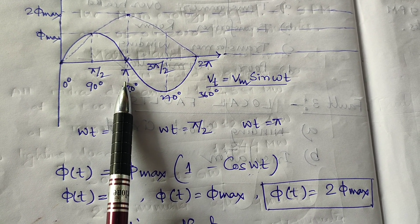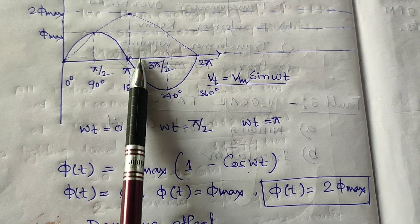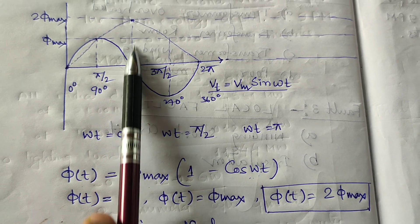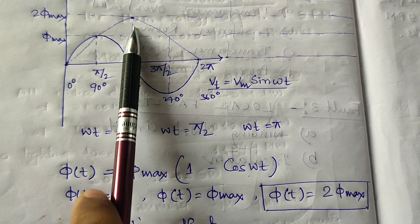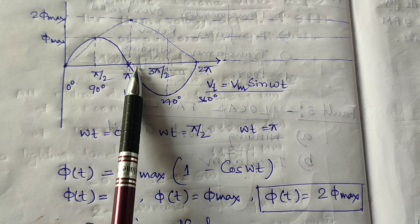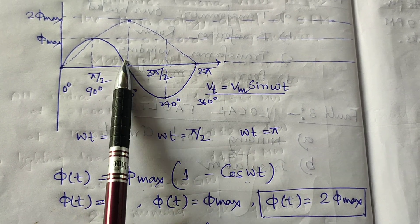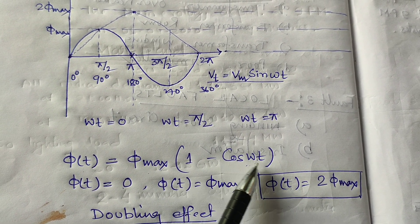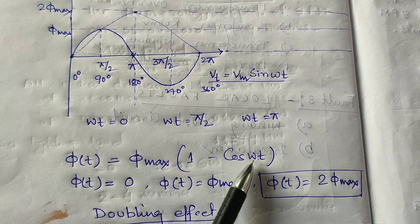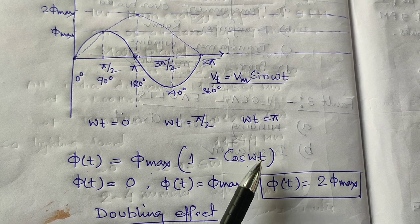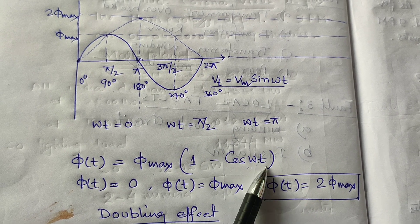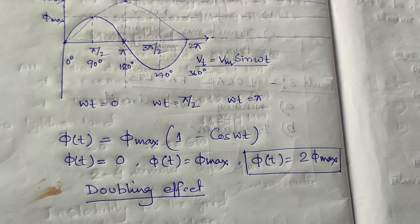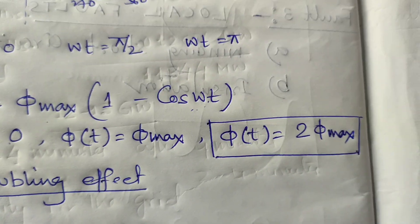This 2φmax value represents the inrush current condition — a huge amount of current is required to saturate the transformer core. Using φ(t) = φmax(1 − cosωt), at ωt = 180°, cos(180°) = −1, giving φ(t) = φmax(1 − (−1)) = 2φmax. So we get 2φmax, which drives the inrush current in the transformer.